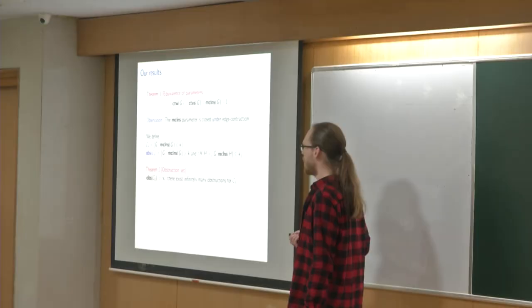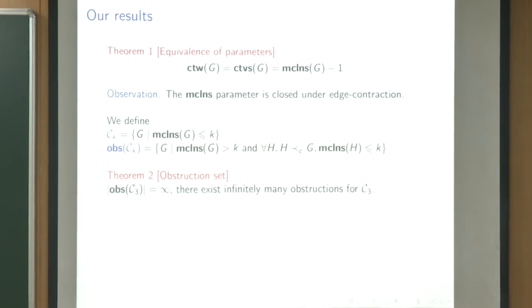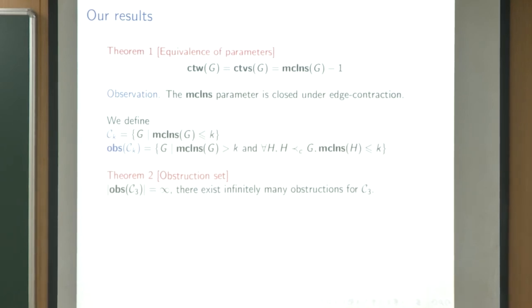The most important result of the paper is characterizing the obstruction set of C3 — graphs with connected treewidth at most 3. We define Ck as graphs with this parameter at most k, and the obstruction set as graphs with parameter strictly more than k but where every contraction has parameter at most k. These are minimal graphs not admissible to parameter at most k. The paper characterizes this obstruction set, which has infinite size but a compact description — this is the technically complicated part.